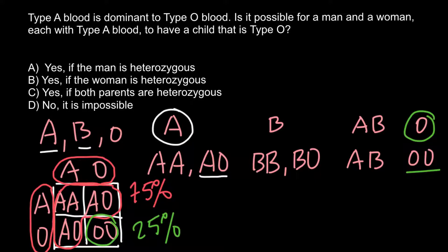As you see, the correct answer is C. Yes, these parents may have progeny that belongs to blood group O if both parents are heterozygous.